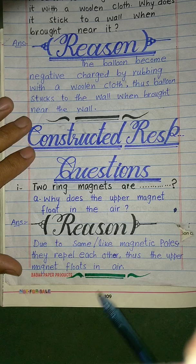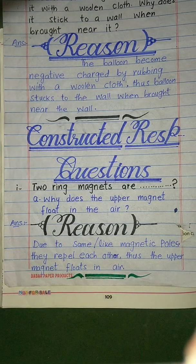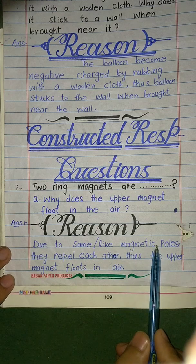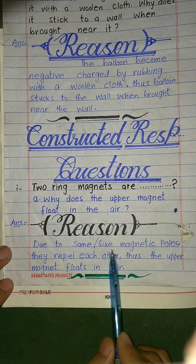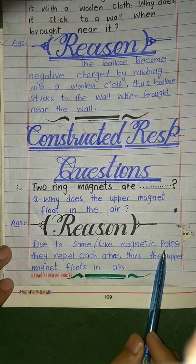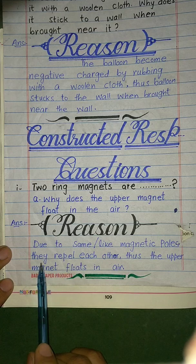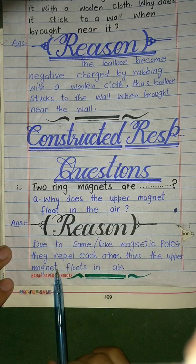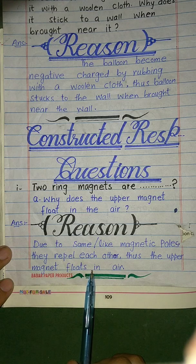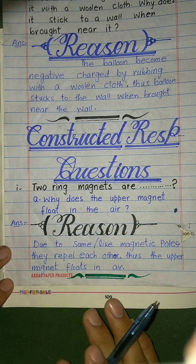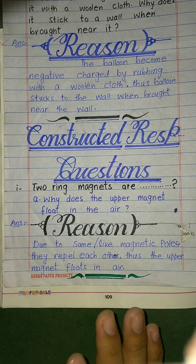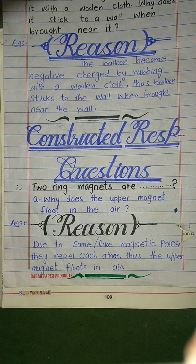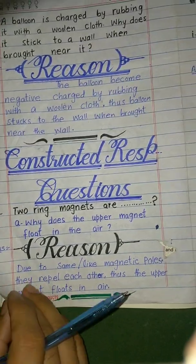The upper magnet floats in the air due to similar (like) magnetic poles facing each other. Like magnetic poles repel each other — they push each other away. Thus, the upper magnet floats in the air because of this repulsion between the same poles.